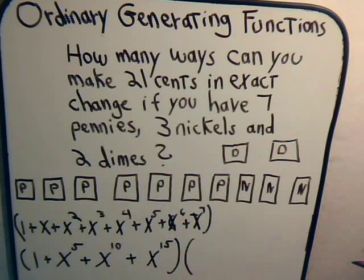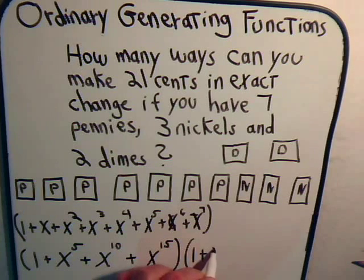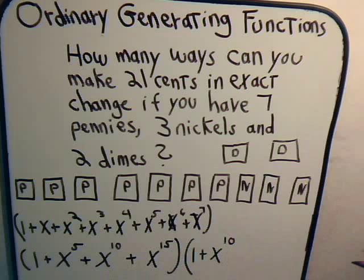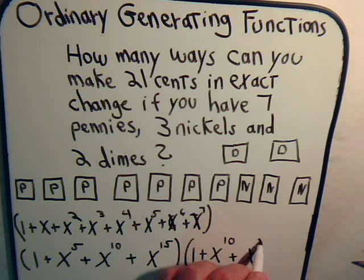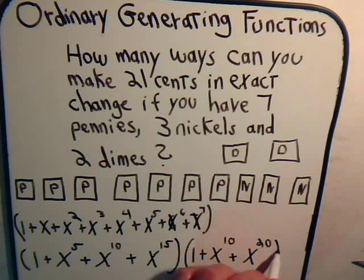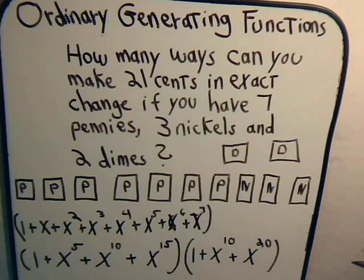And then for the dimes, maybe we won't choose any, or perhaps we choose 1, 1 dime is 10 pennies, or we may choose 2. So this would be the generating function for the pennies, this for the nickels, and this for the dimes.